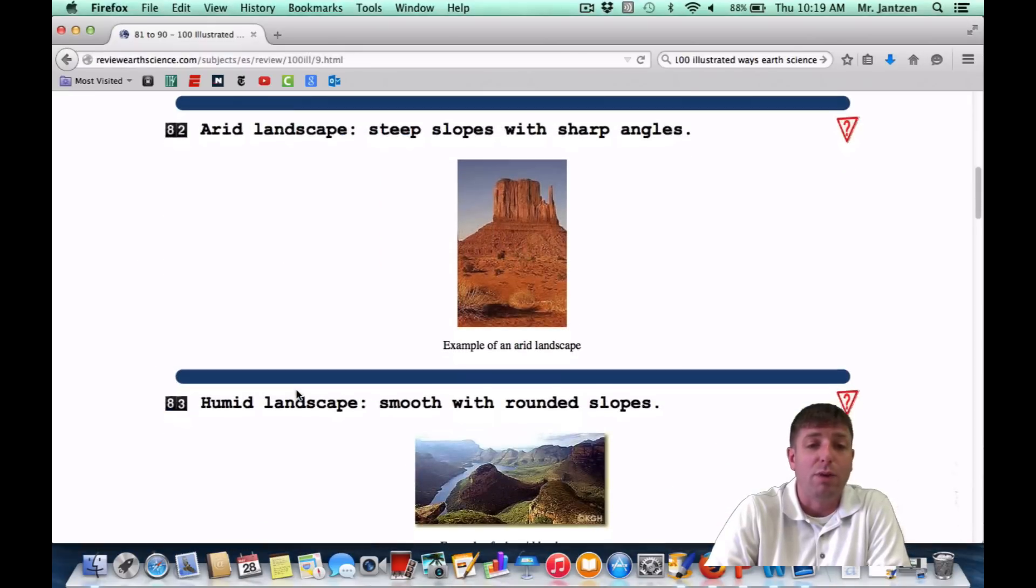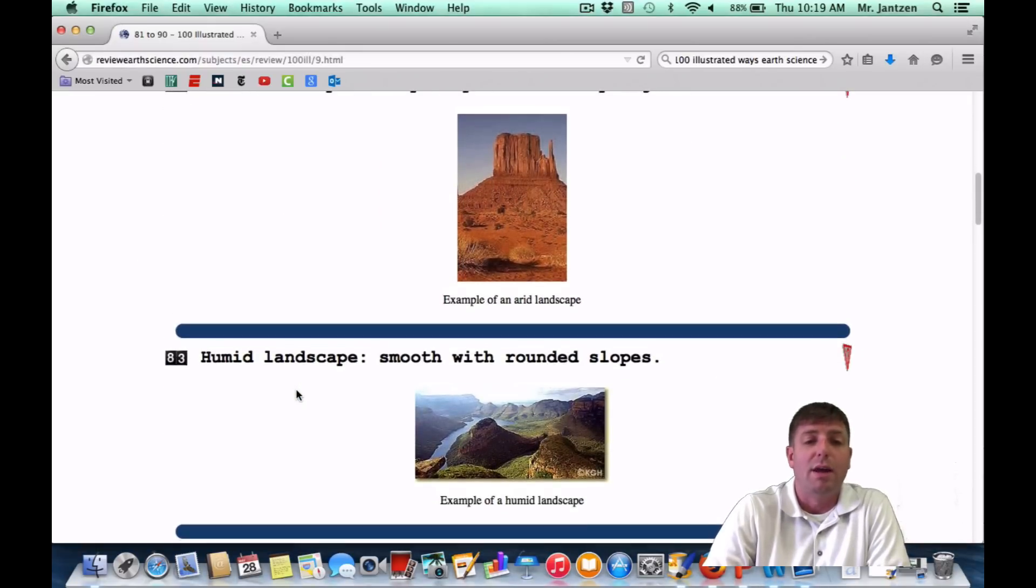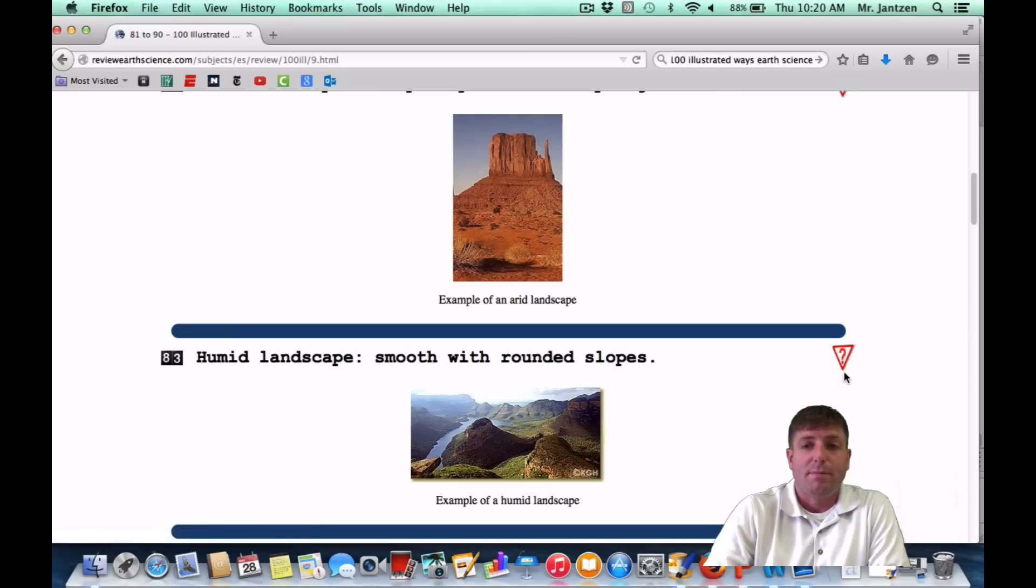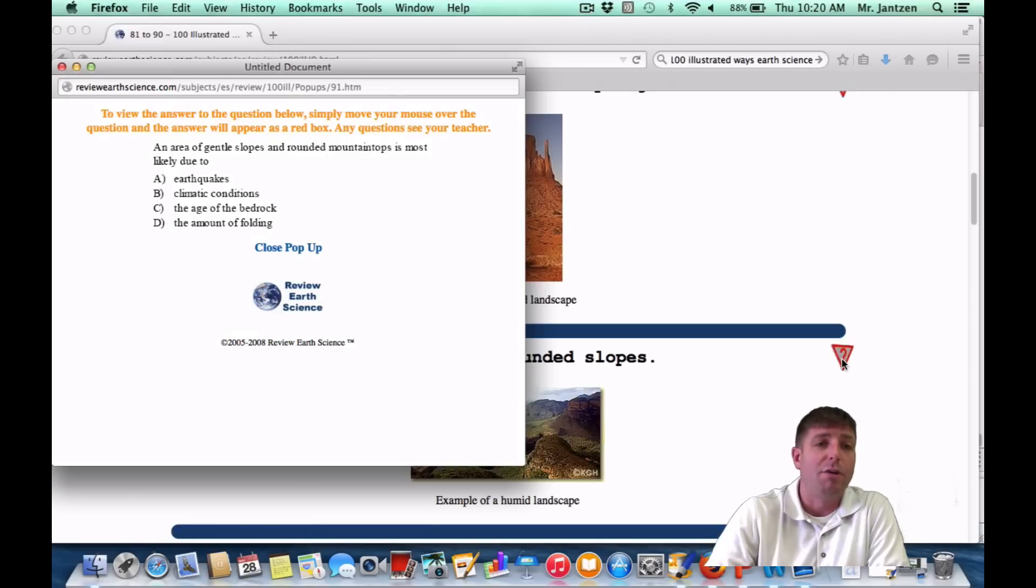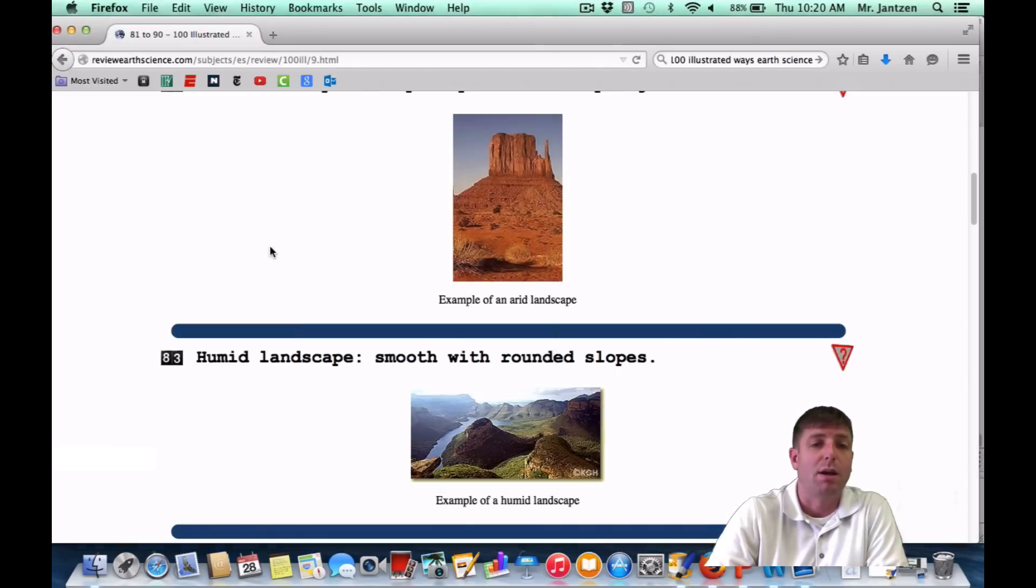This is kind of leading into number 83: humid landscapes have a smooth area with rounded slopes. So they're going to be filled with vegetation, grasses. There's a lot of water. It's humid. It's wet. So there's going to be plenty of weathering to make these landscapes rounded, and there's going to be a lot of vegetation there. As a regents question, it may appear something like this: an area of gentle slopes and rounded mountaintops is most likely due to what? So that's going to be something to do with the humidity or the climate of the area, or choice B.